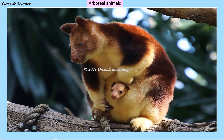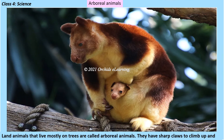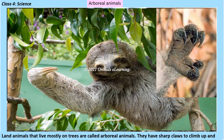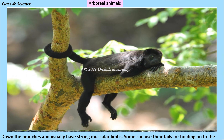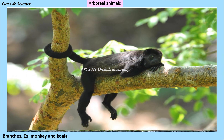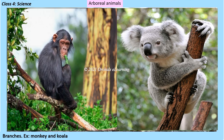Arboreal animals: land animals that live mostly on trees are called arboreal animals. They have sharp claws to climb up and down the branches and usually have strong muscular limbs. Some can use their tails for holding on to the branches. Examples: monkey and koala.